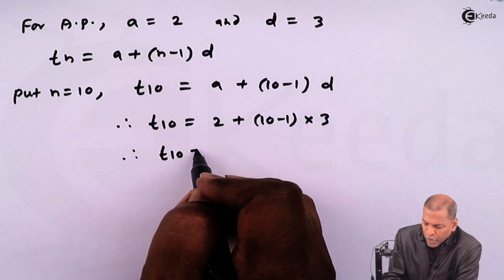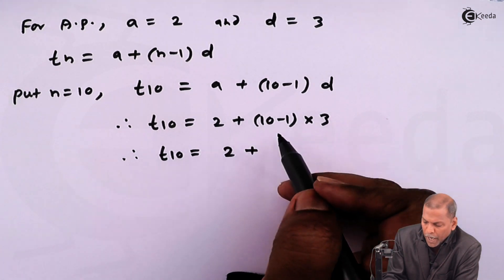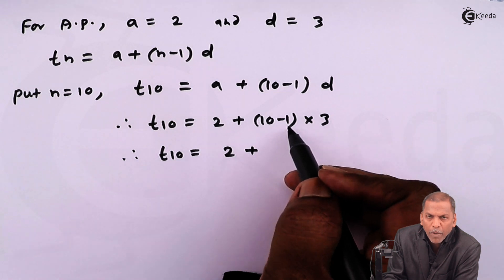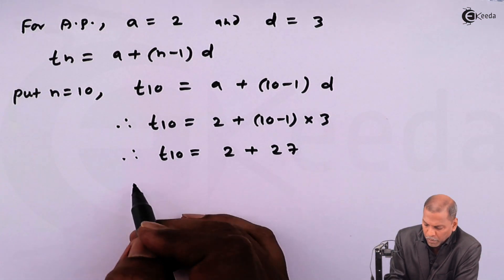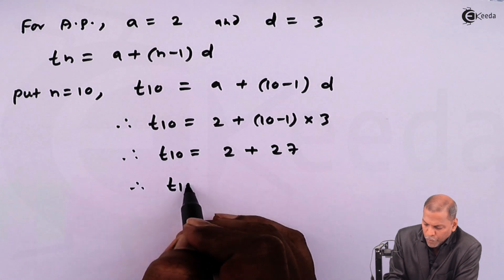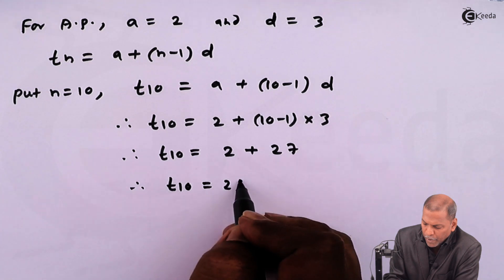So the next step will be T10 is equal to two plus, now 10 minus one gives nine and that multiply by three, so we get 27. And therefore, T10 is equal to 27 plus two, we get 29.